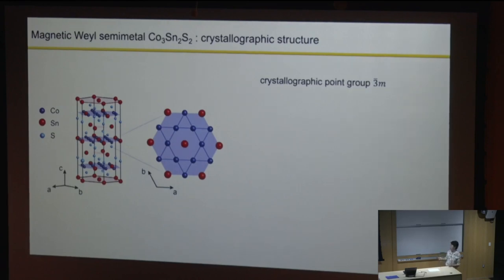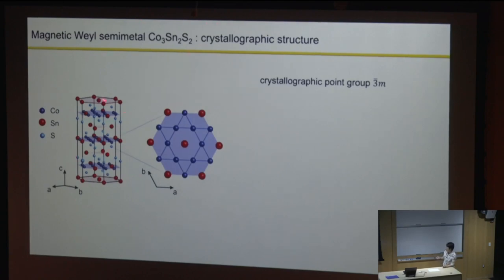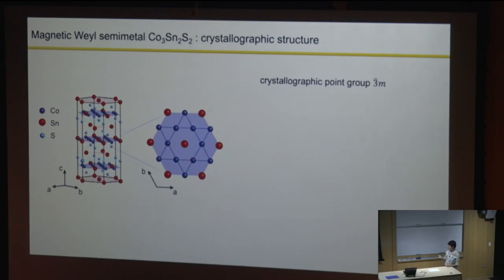From here, we focus on the symmetry evolution as a magnetic system orders. This is meaningful because Weyl semimetal physics cares about the magnetic states. If people didn't know the magnetic states well enough, knowledge of the Weyl physics is also not completely understood. Our candidate compound is cobalt tin sulfide. This is also a layered structure ionically bonded between layers, and the main part is the Kagome lattice. It has the very same point group as before: inversion symmetry, three-fold rotational symmetries, and three mirrors.